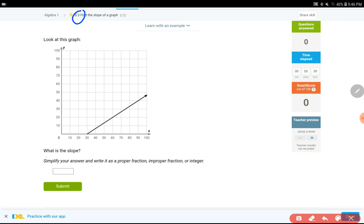Here is our question. Look at this graph. What is the slope? It's a pretty simple question. However, when you write your answer, make sure you simplify your answers and write it as a proper fraction, improper fraction, or as an integer, which means like 0, 1, negative 10, positive 7, and so on. Just a number.